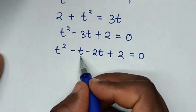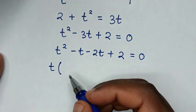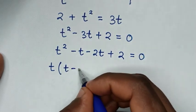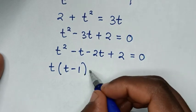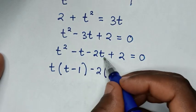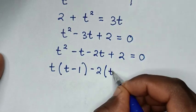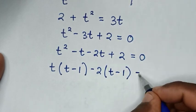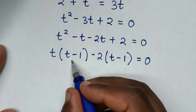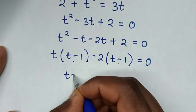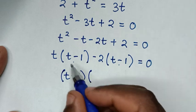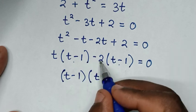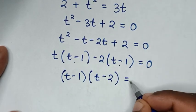From the first two terms, t is common, giving t(t - 1). From the last two terms, -2 is common, giving -2(t - 1). So the factored form is t(t - 1) - 2(t - 1) = 0, which gives (t - 1)(t - 2) = 0.